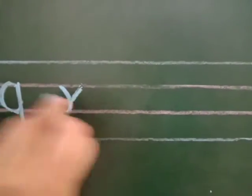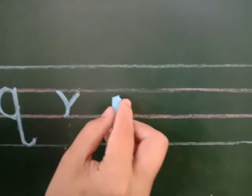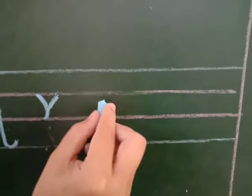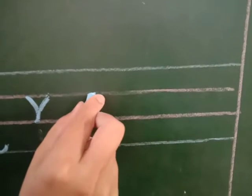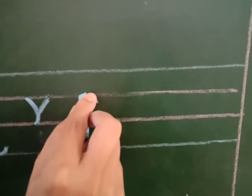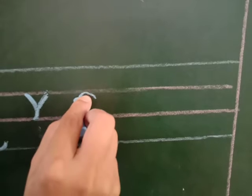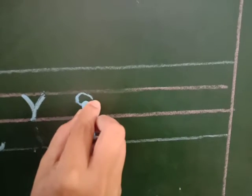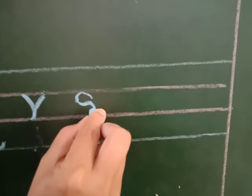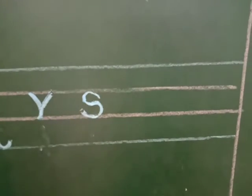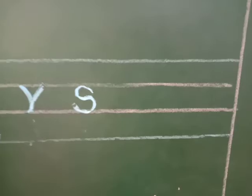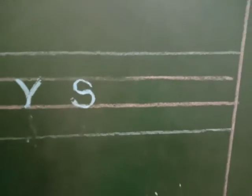Now we are going to learn how to write small s — in the middle two lines: curve line, another curve line. Small s.